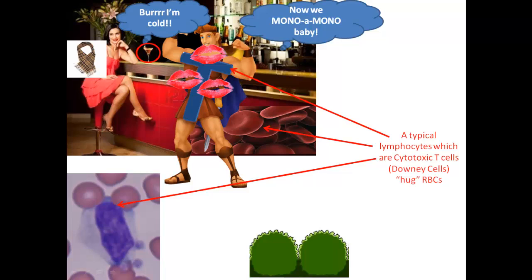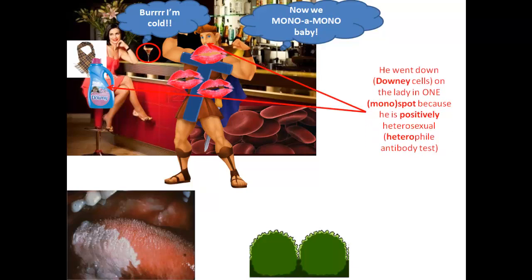Now let's take that word downy and use it a little bit further. I decided to pick a downy bottle and placed it in a certain region — now this is the graphic part I was telling you about, but hopefully it'll help you to remember this. So Hercules went down — downy cells — on the lady in one spot, mono meaning one. And because he is positively heterosexual, that's reminding you of a heterophile antibody test — very important, because cytomegalovirus, the next herpes virus, is going to be a negative heterophile antibody test. Now because he went down on her, he gave her hairy oral — just to remind you of hairy oral leukoplakia. I warned you. And you usually find this in AIDS patients.